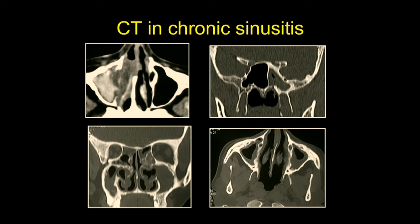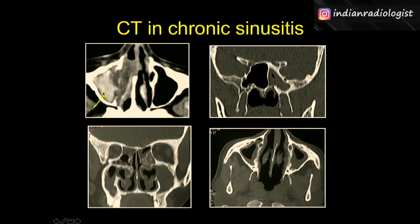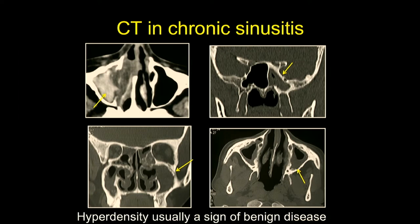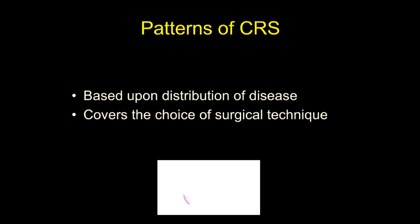Before we go on to understand these patterns, let's do a quick revision of the findings in chronic sinusitis. We could have secretions within the sinuses which could be hyperdense, as we see here. We could have adjacent bony thickening and bony sclerosis, which is a marker of chronicity. We could have certain calcifications which would be peripheral and scattered. Remember, hyperdensity is a sign of benign disease — it basically excludes tumor. The other causes of hyperdensity being fungal infection and hemorrhage.